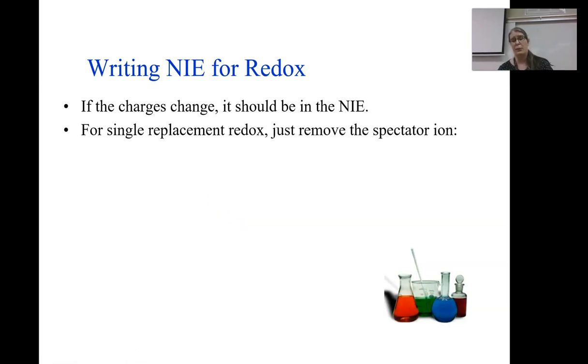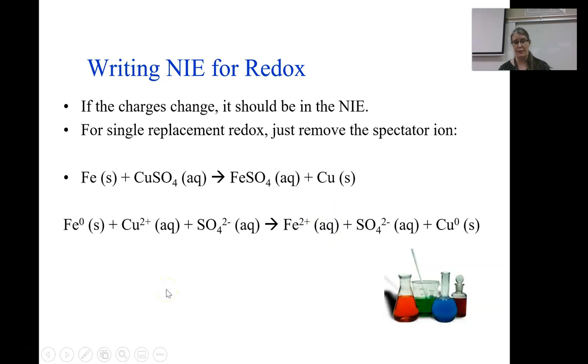For a single replacement redox reaction, we just remove the spectator ion. Here's a classic single replacement reaction. If I put an iron nail into a solution of copper sulfate, eventually I will find the iron nail loses mass because it forms iron sulfate which dissolves. But I will also see that brown shiny copper metal being formed. If I break that up into its total ionic equation, I see two things which stay the same on both sides, those sulfate ions. And so I just remove the spectator ion.